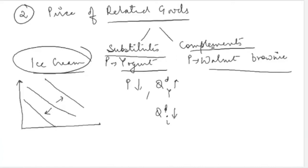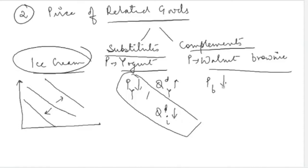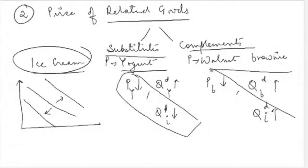A complementary good has a negative relationship with the main good. A complement is something consumed along with ice cream, not an alternative — like a brownie. If the price of brownie decreases, consumption of brownie increases, and since brownie is consumed with ice cream, demand for ice cream also increases. So a fall in the price of a complementary good induces more consumption of the main good.